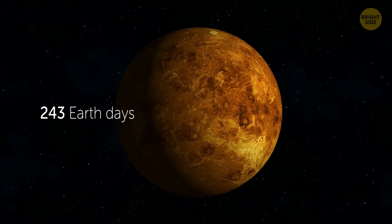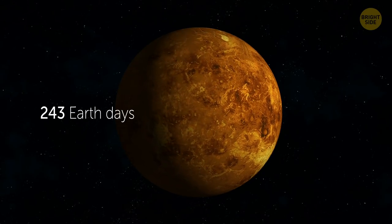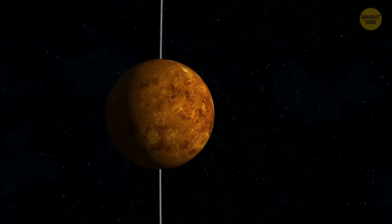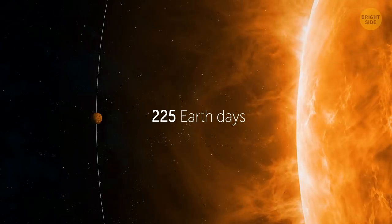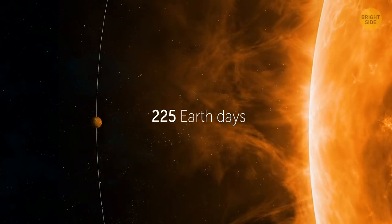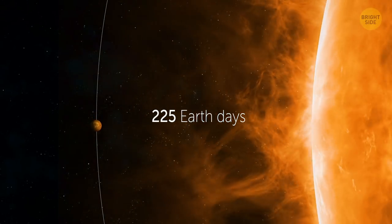It takes 243 Earth days for Venus to complete a rotation around its axis, but it takes 225 Earth days for the planet to orbit the Sun. That means a day on Venus is longer than a year.